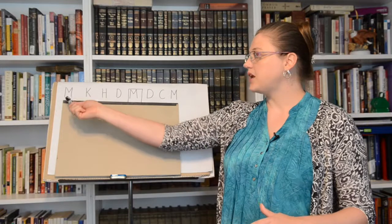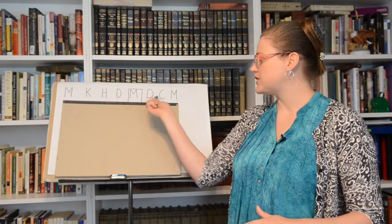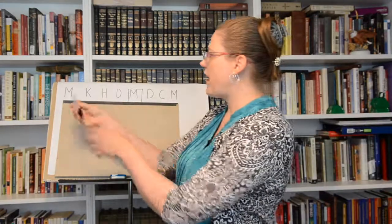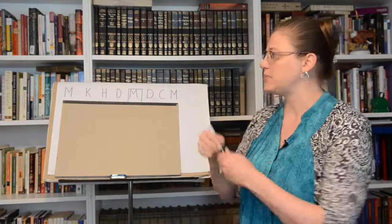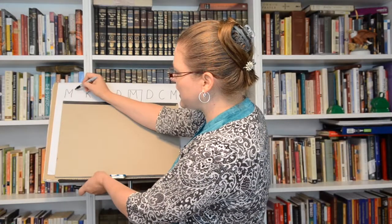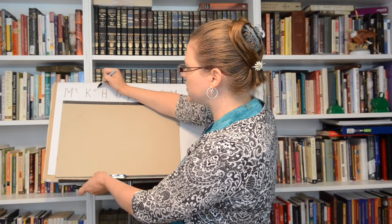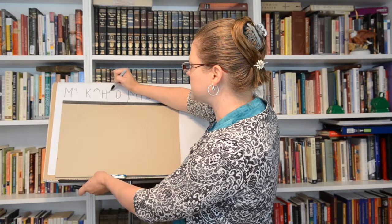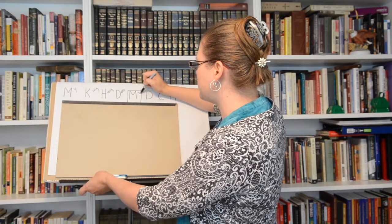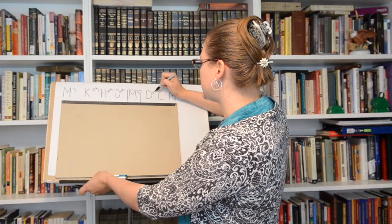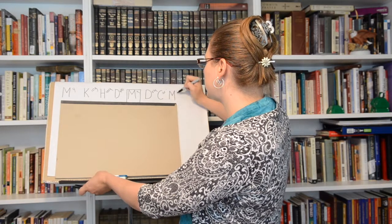So the mnemonic is My King Henry Does My Dirty Car Mats. So I'll have the kids write this part on their paper every single time, but the first time that they're learning it, we'll go ahead and write the word so that they remember what it is. My King Henry Does My Dirty Car Mats.